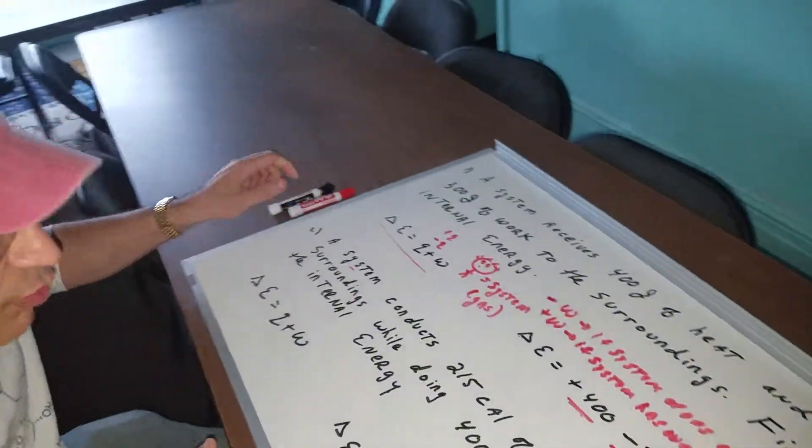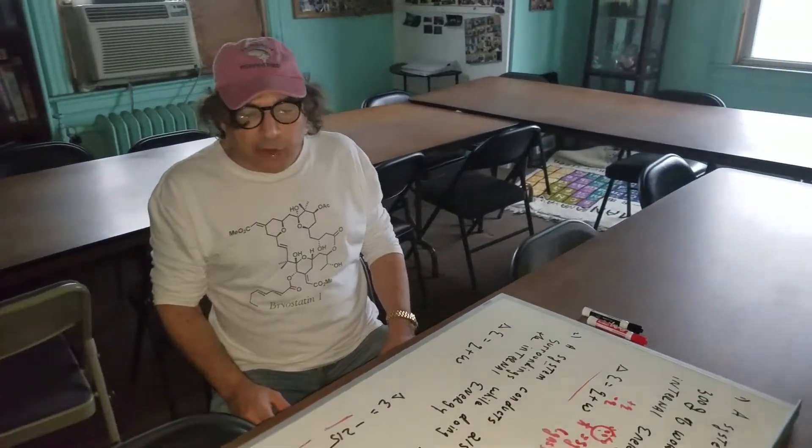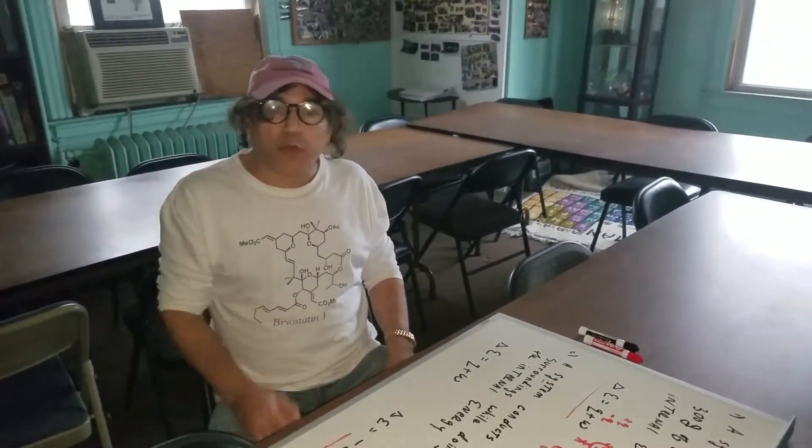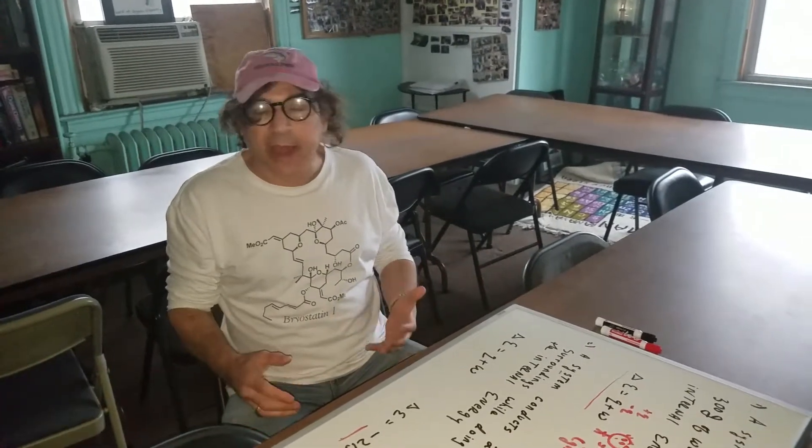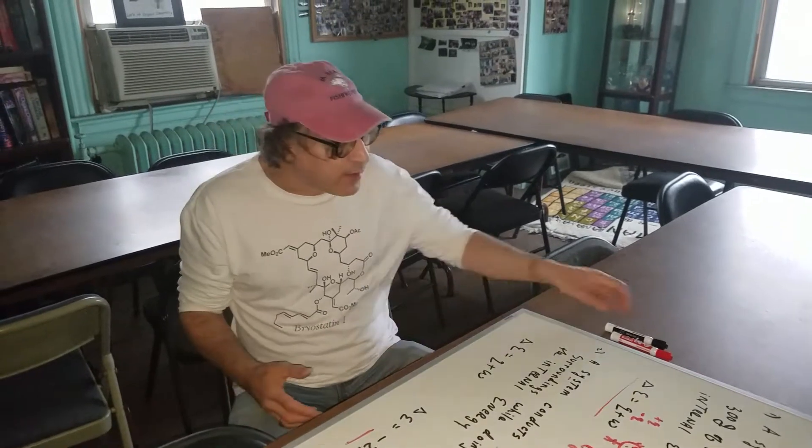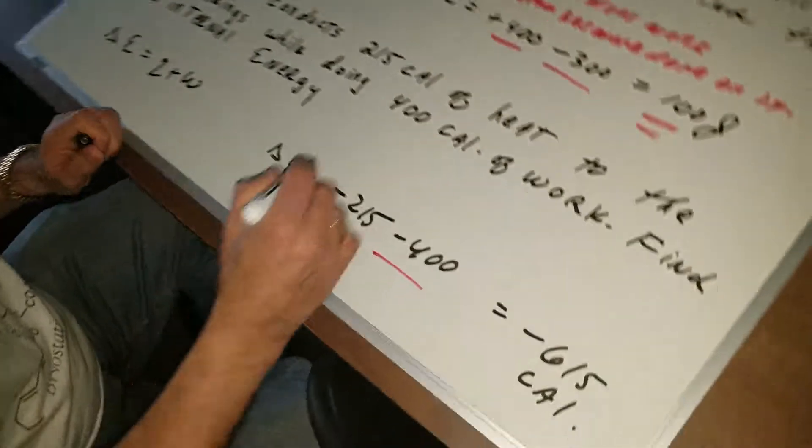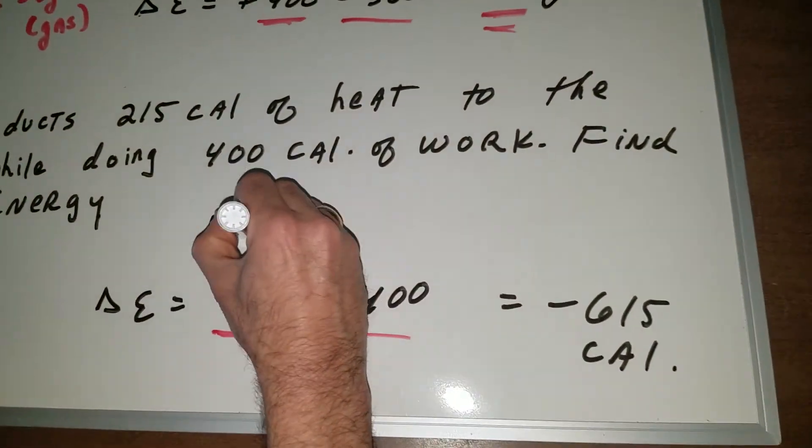If you understand these two, I believe I have another problem in the DAT Destroyer on internal energy and you're in good shape. You asked one other question to me. You asked me about an isochoric system. An isochoric system means the volume is constant. And if you just come around here one more time, I just want to add one more thing. Work is defined as minus P delta V.